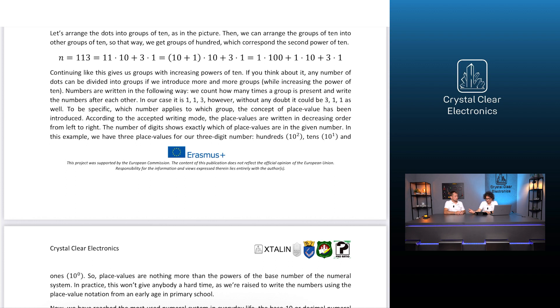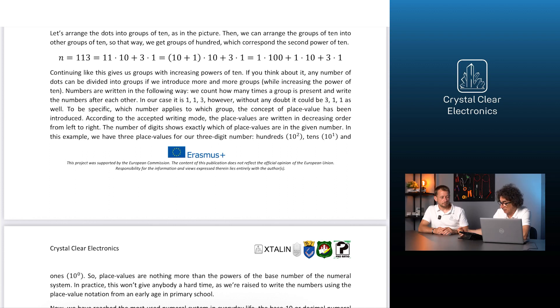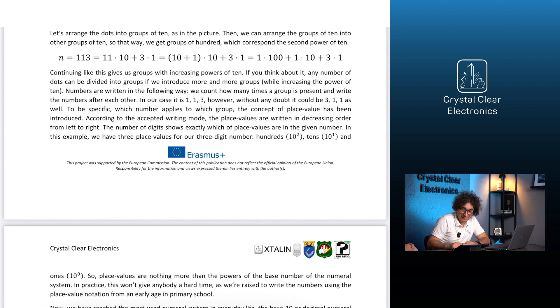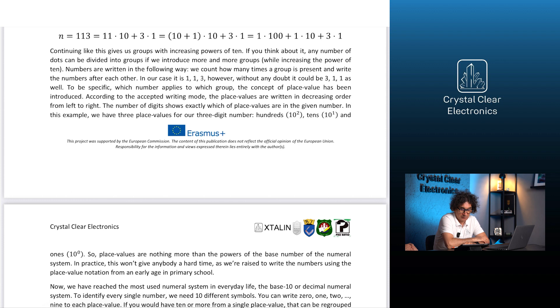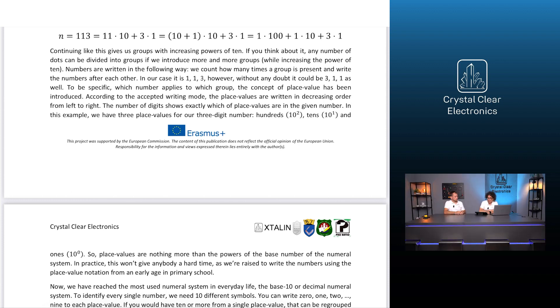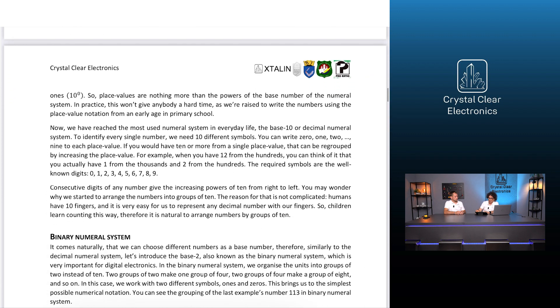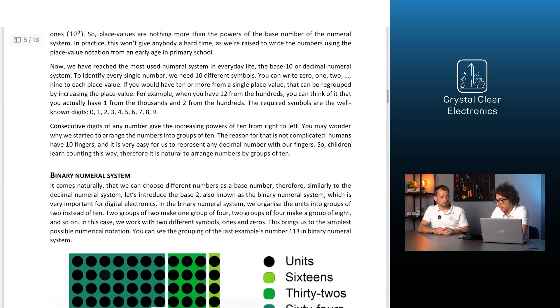However, without any doubt, it could be 3 1 1 as well. To be specific, which number applies to which group, the concept of place value has been introduced. According to the accepted writing mode, the place values are written in decreasing order from left to right. The place values are written in decreasing order from left to right. The number of digits shows exactly which of place values are in the given number. Now we have reached the most used numeral system in everyday life, the base 10 or decimal numeral system.